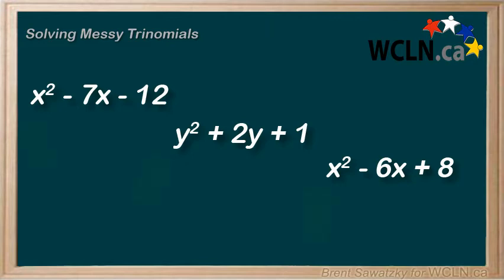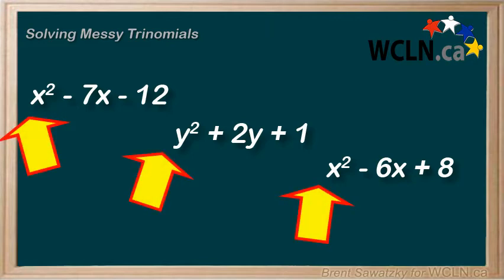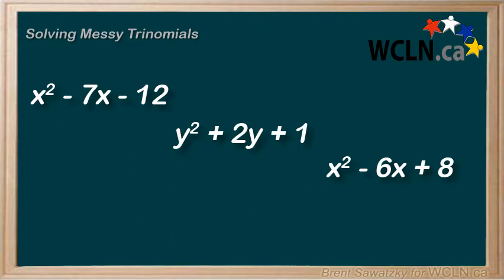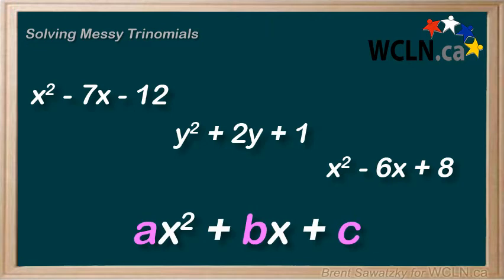Right, there's no number in front of the first squared terms. If we generalized trinomials as ax² + bx + c, then all of these trinomials would have an a of 1. We can see that their b's and c's can be all kinds of values, but these ones all have an a of 1.